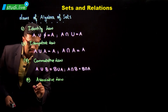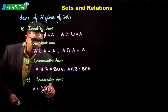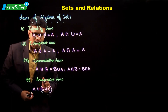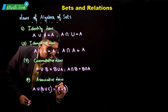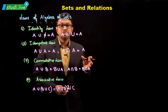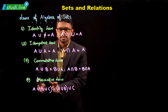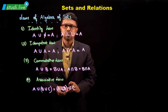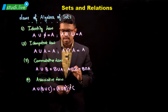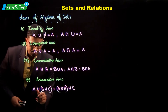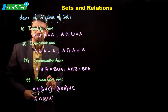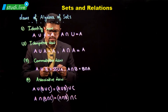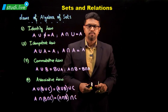Next we have the associative law. In the associative law, if there are three sets — A union (B union C) — the brackets are on B union C, meaning we first find B union C and then take the union with A. But by the associative law, we can interchange the position of the brackets. So (A union B) union C gives the same result. Everything should be either all union or all intersection. So A intersection (B intersection C) can also be written as (A intersection B) intersection C.